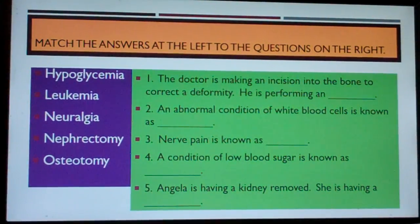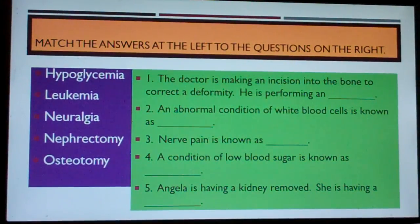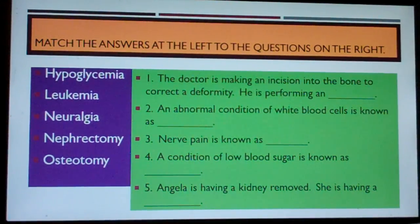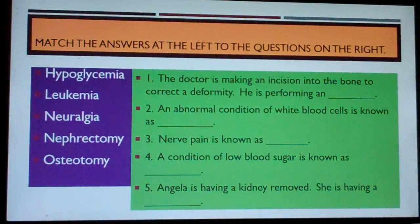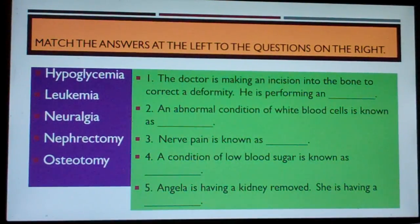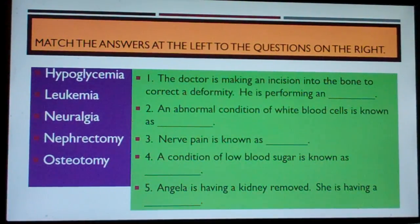Match the answers at the left to the questions on the right. Number one: The doctor is making an incision into the bone to correct a deformity. He is performing a blank. Number two: An abnormal condition of white blood cells is known as blank.